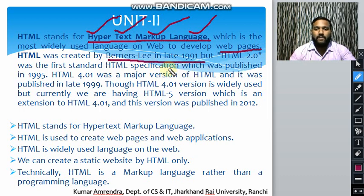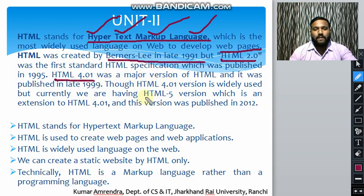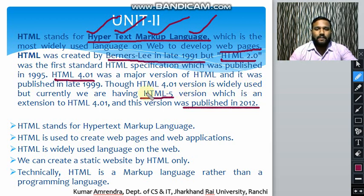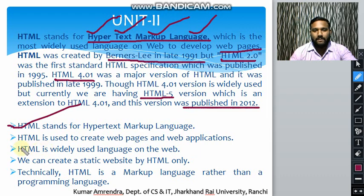The developer was Berners-Lee. The first version of HTML was HTML 2.0, followed by HTML 4.0, and then HTML 5, which is the latest version published in the year 2012. HTML 5 is the current working version of HTML. So let us see some key points of HTML — it stands for Hypertext Markup Language and is used to create web pages and web applications.